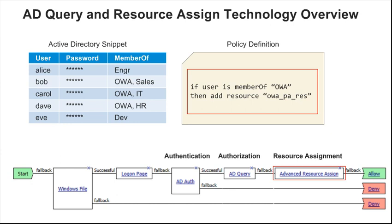For example, if the Advanced Resource Assign action was configured with the policy shown here, then if a user were a member of OWA, that user would receive the OWA portal access resource. Considering the Active Directory snippet, users Bob, Carol, and Dave would see the OWA resource on their landing page. Users Alice and Eve would not.